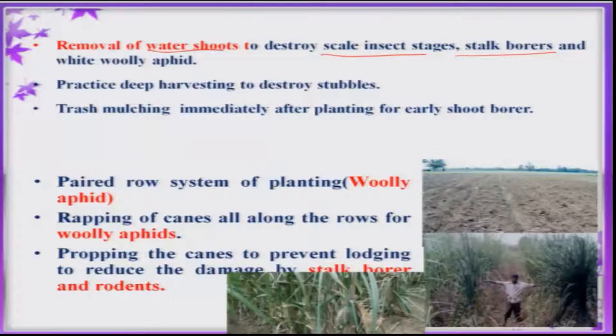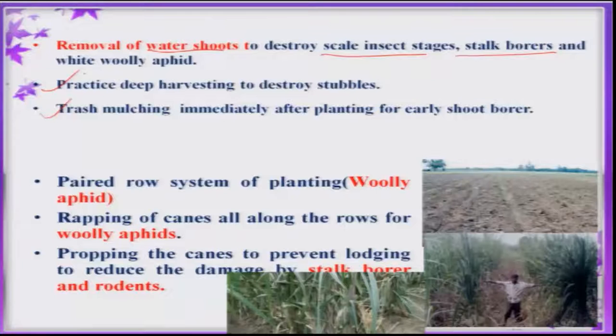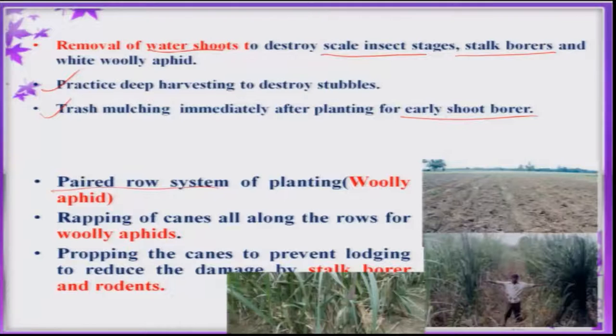Always practice deep harvesting, which helps in the destruction of stubbles and reduces insect pest population in the next season. Trash mulching immediately after planting is also an important practice, as it increases natural enemies that reduce pest population, especially early shoot borer. For woolly aphid, wherever the problem exists, one can practice a paired row system of planting to reduce the population. Wrapping of canes along the rows also reduces woolly aphid population.